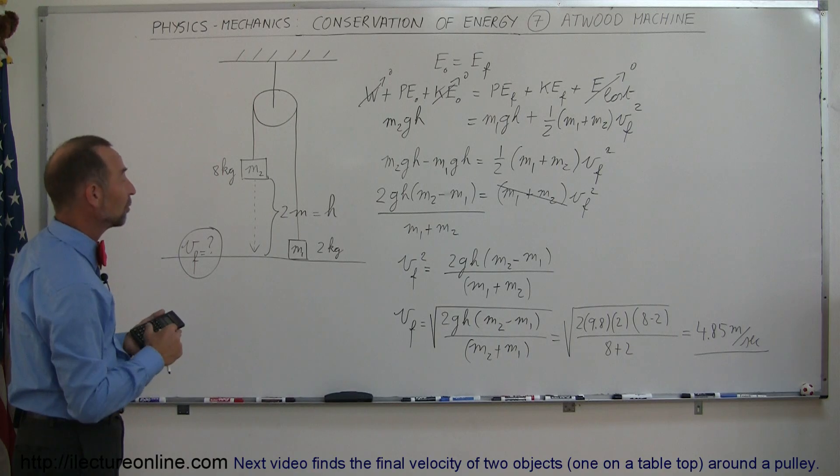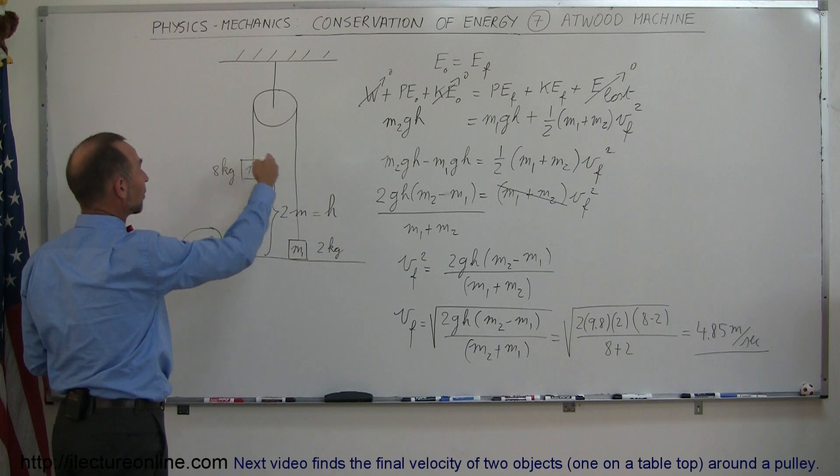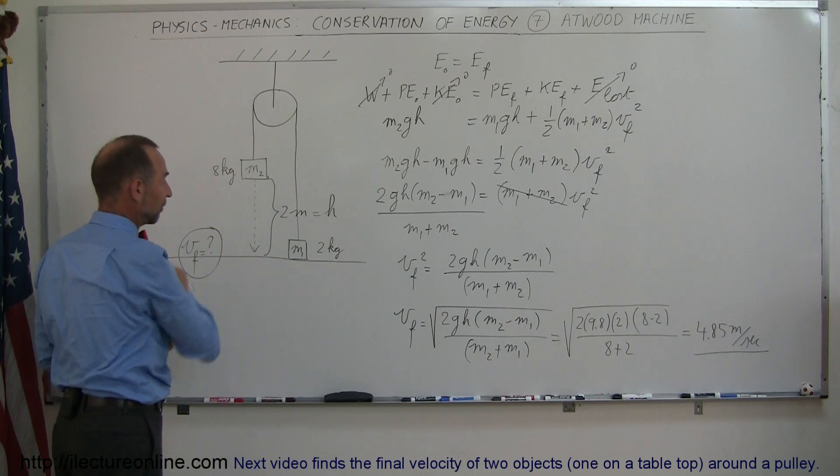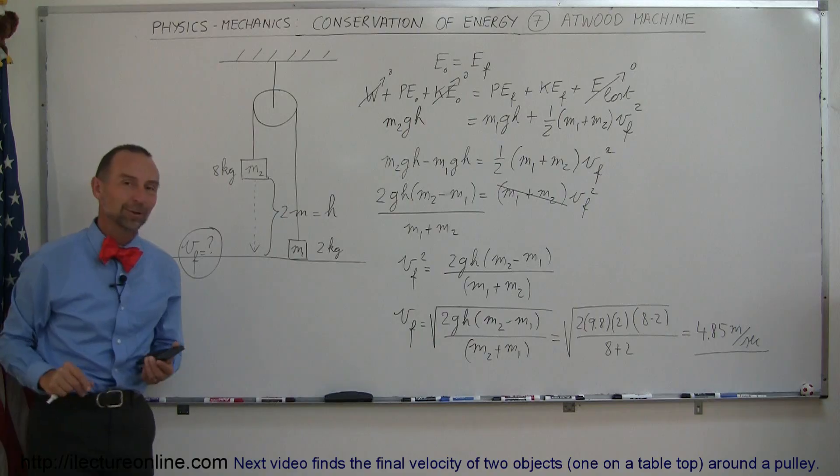All right, so that's how we work with the Atwood machine, or simply stated, that's how we work with a pulley system. We have a mass on each side and want to know what the final velocity is when the heavy object reaches the ground. And that's how you do that problem.